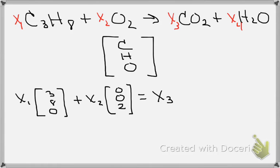That's got to be equal to the unknown number of moles, x3, of carbon dioxide. What do I have in carbon dioxide? Well, I have one atom of carbon, no atoms of hydrogen, two atoms of oxygen.